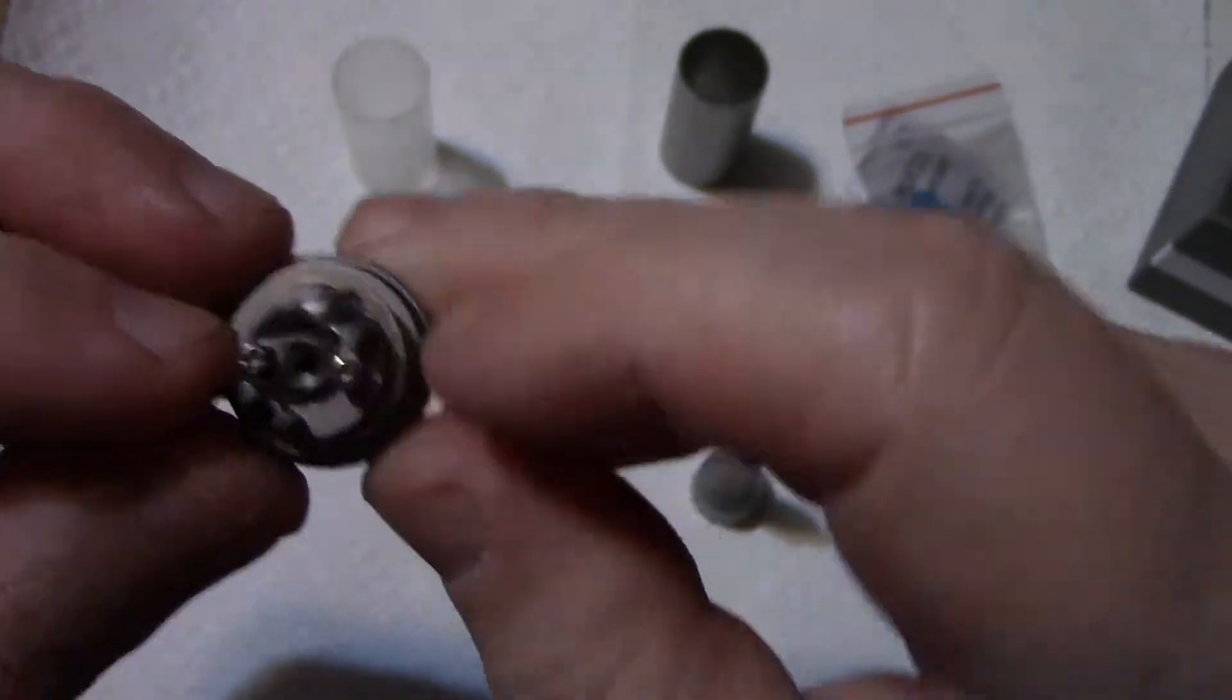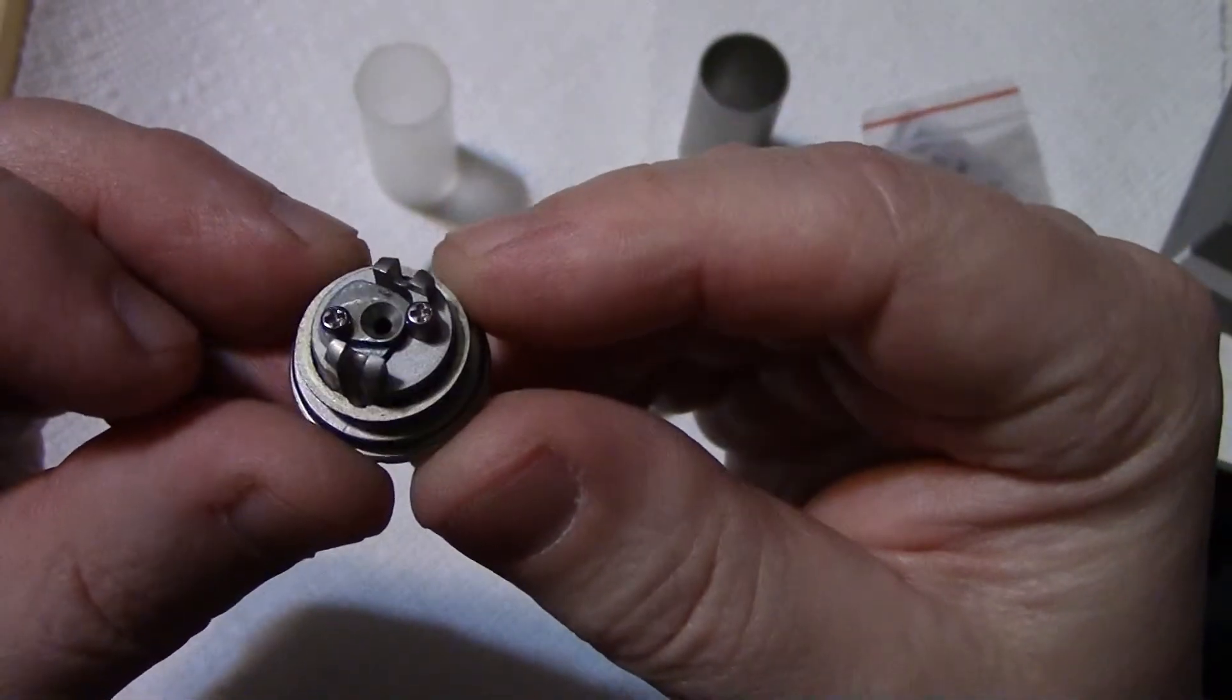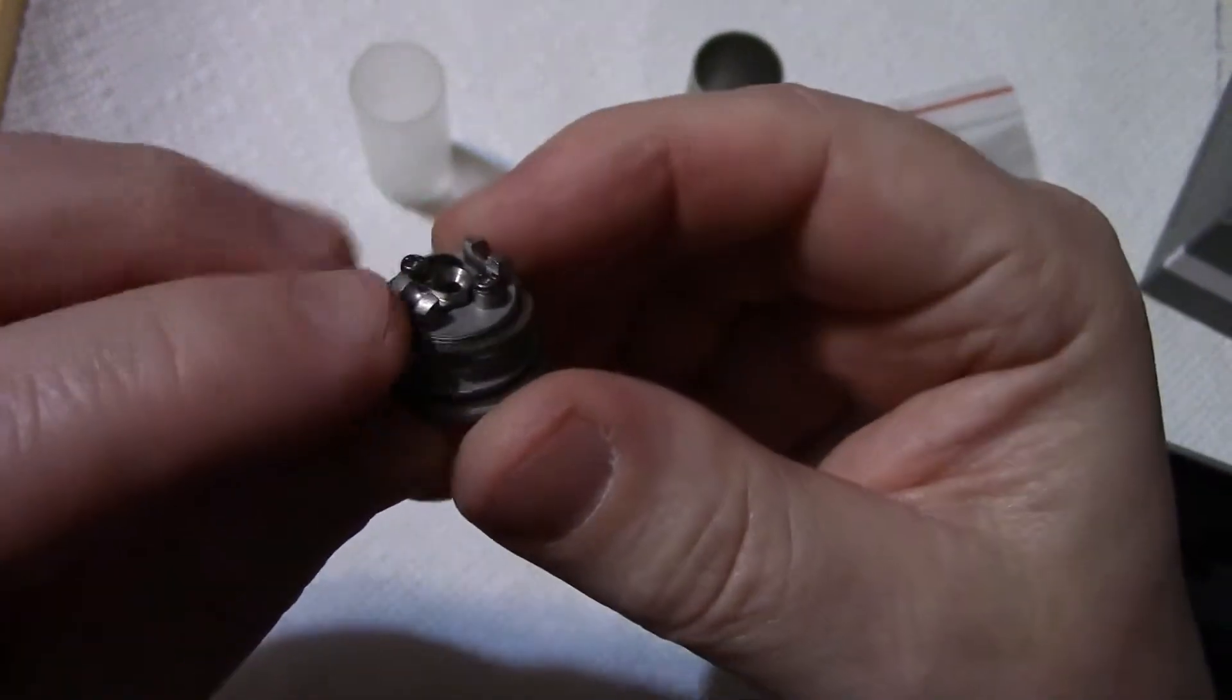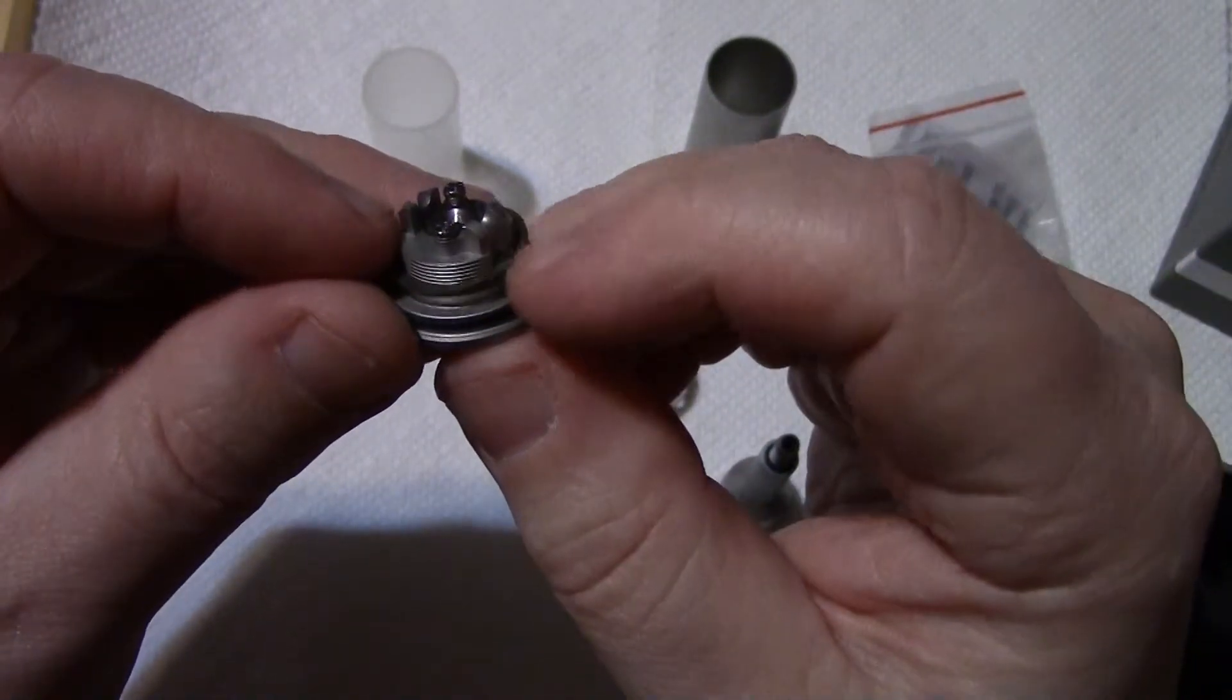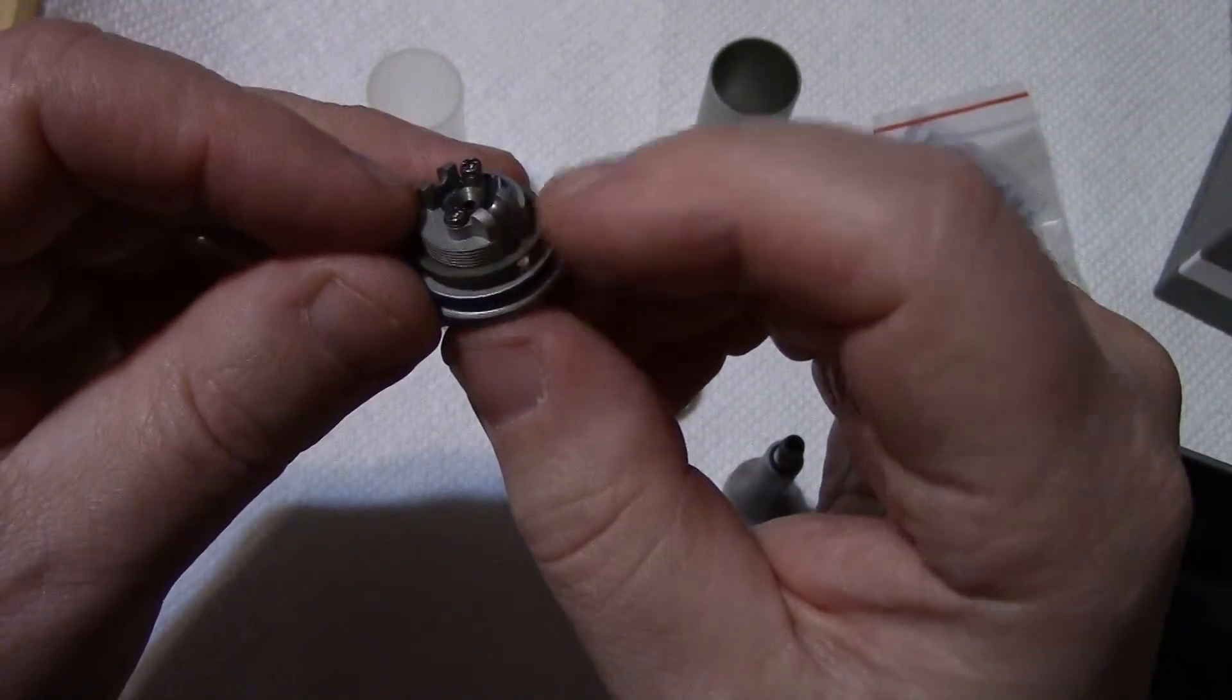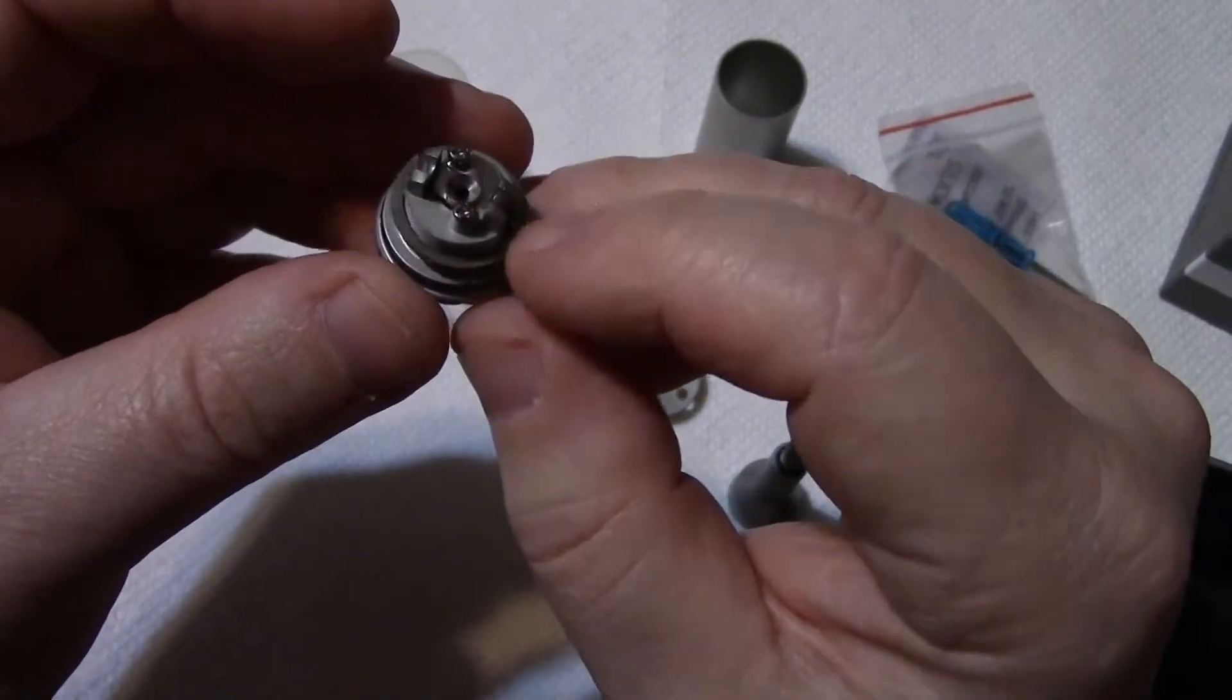The screws are about the same size as a Kayfun deck, and then your wick comes down and is supposed to rest even with this ring.